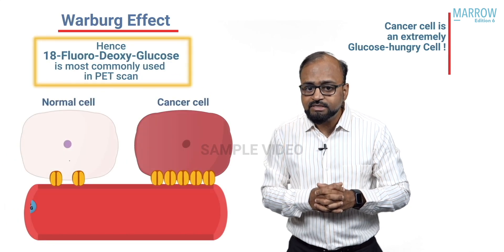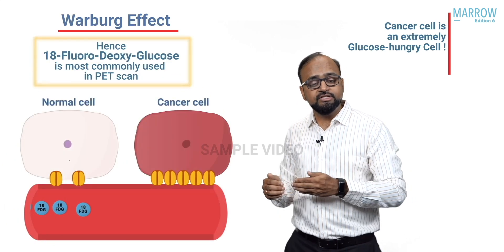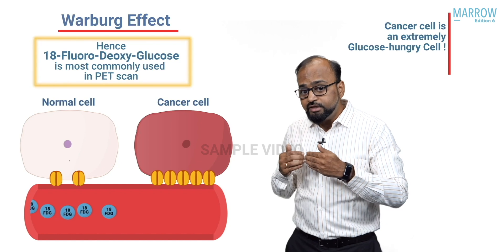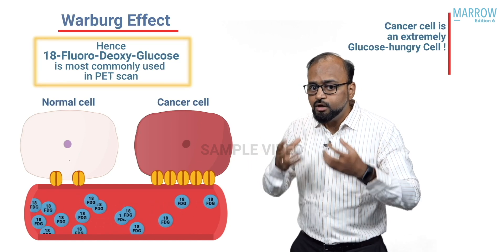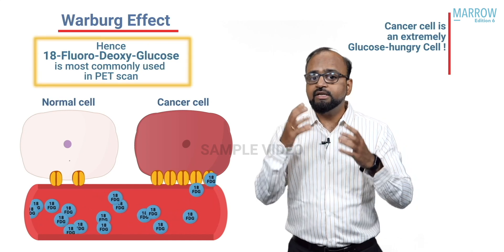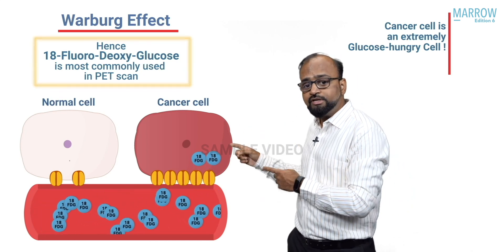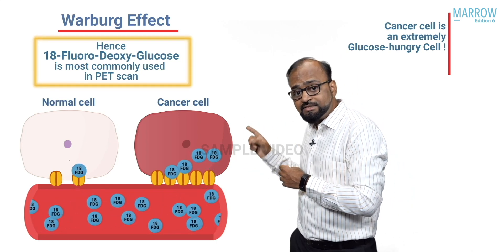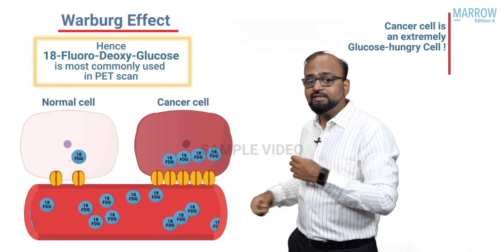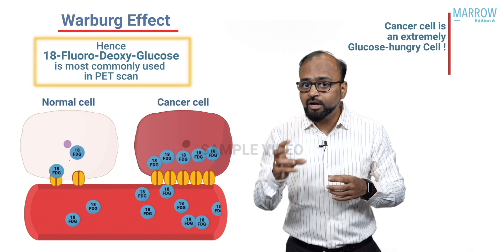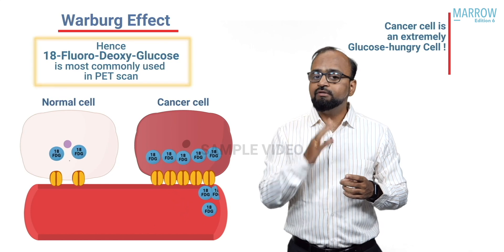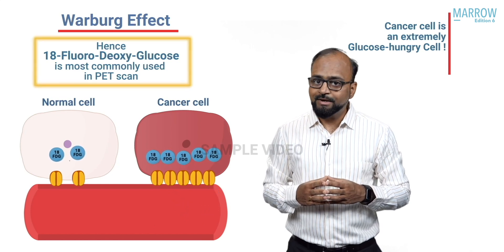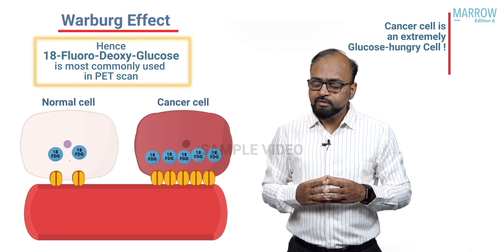When we inject FDG, because of the increased number of GLUT1 transporters and the glucose-hungry nature of the cancer cell, all this 18-FDG is concentrated into the cancer cell. That is how we are able to localize where cancer cells are in the body when we use this 18-FDG metabolite.